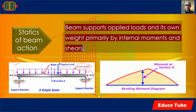The application of loads to a structure causes the structure to deform, and due to this deformation, various forces such as internal moments and shears are produced in the components that comprise the structure. For this reason, a beam supports applied loads and its own weight primarily by internal moments and shears. The loads W and P cause bending moments as shown in this diagram.